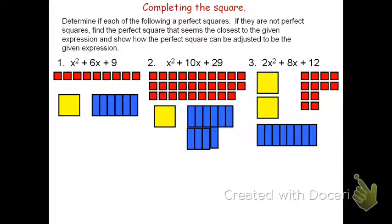This video will review completing the square using a visual model. Problem number 1 has the trinomial x² + 6x + 9. Down below we see the tiles that match this.